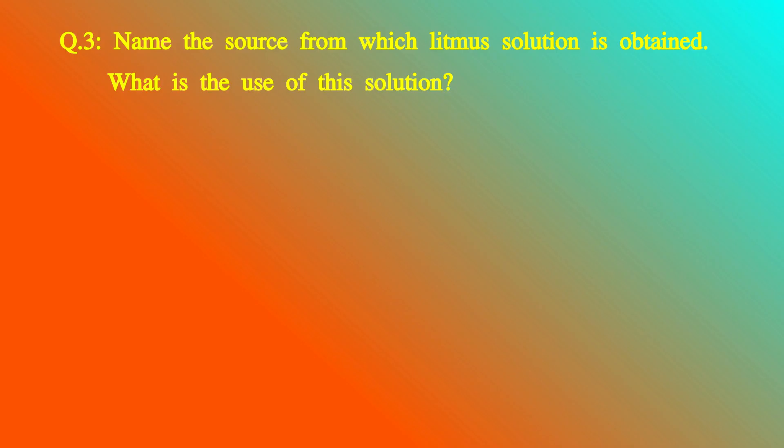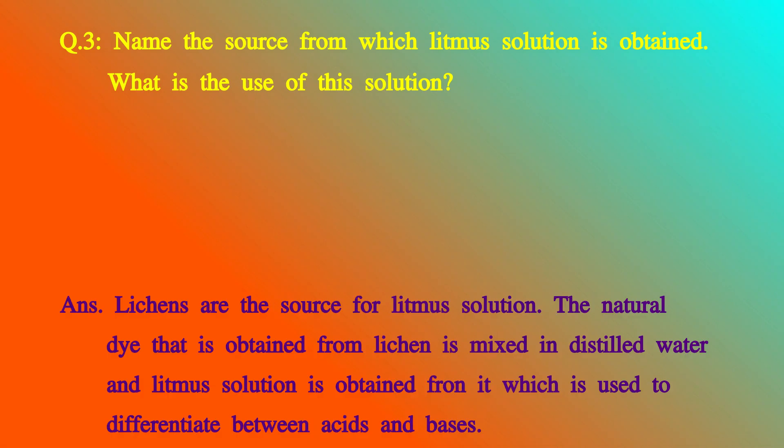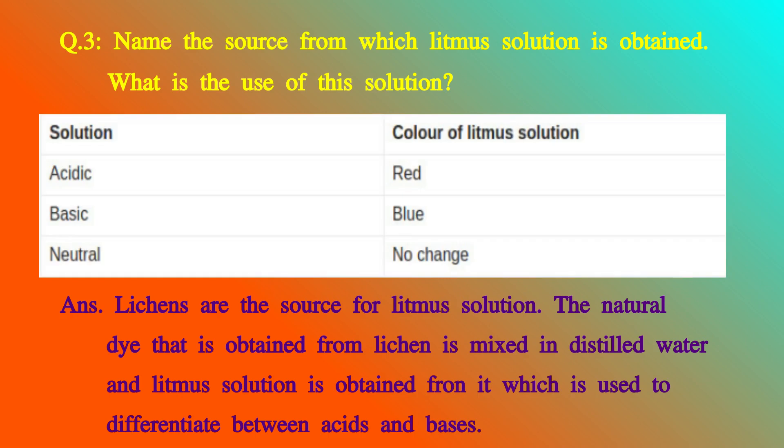Question 3: Name the source from which litmus solution is obtained and what is the use of the solution? The answer is litmus solution is obtained from lichens. A natural dye extracted from lichens is dissolved in distilled water to obtain litmus solution. It is used as an indicator to distinguish between acids and bases.